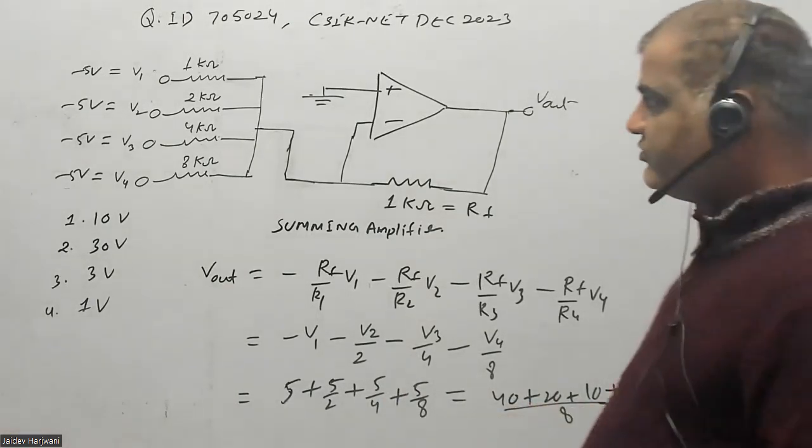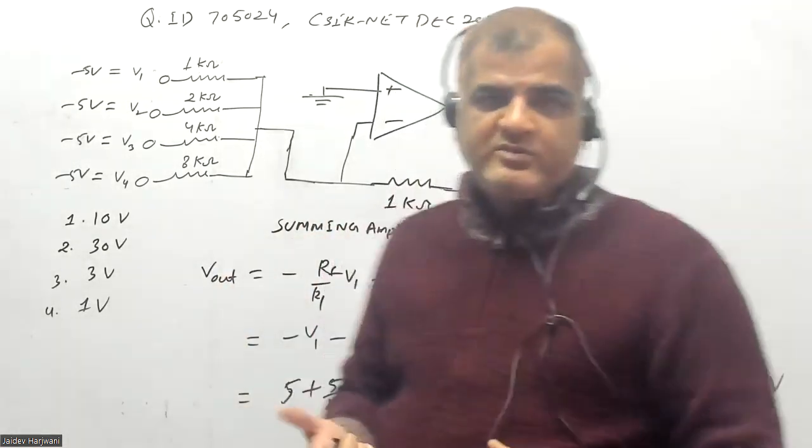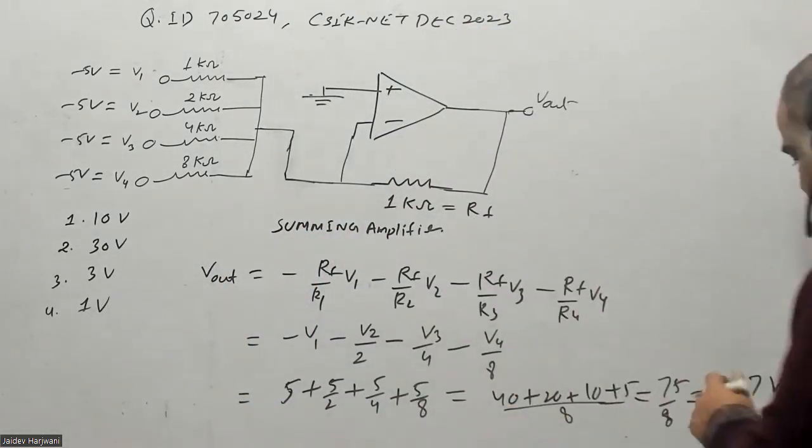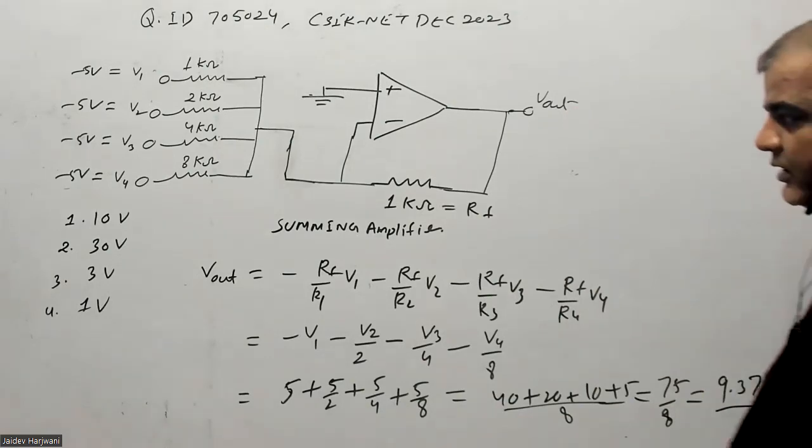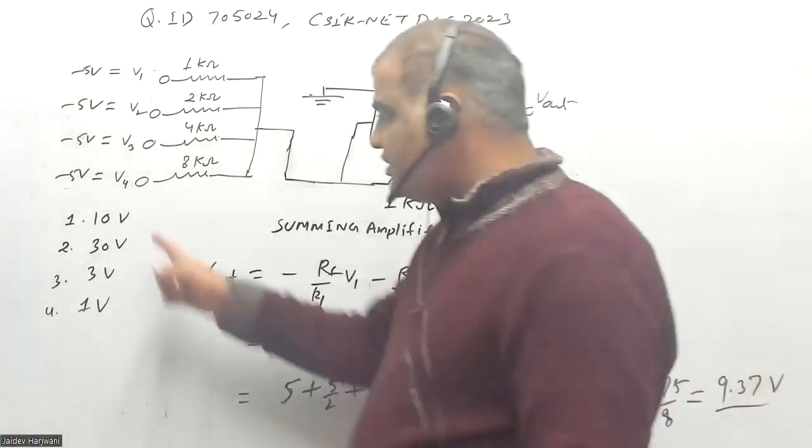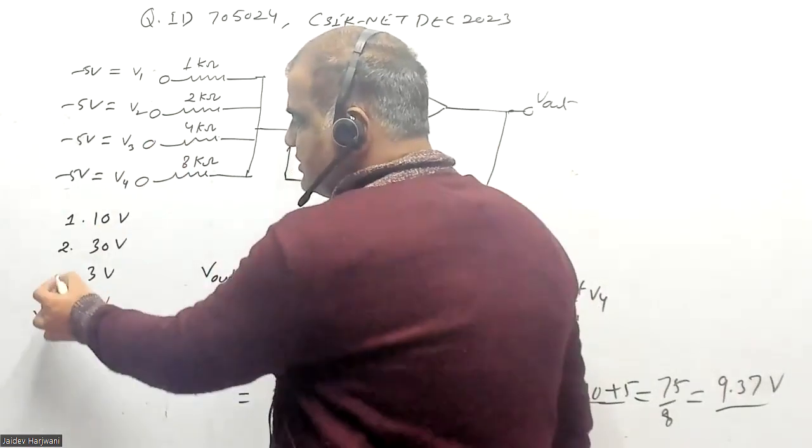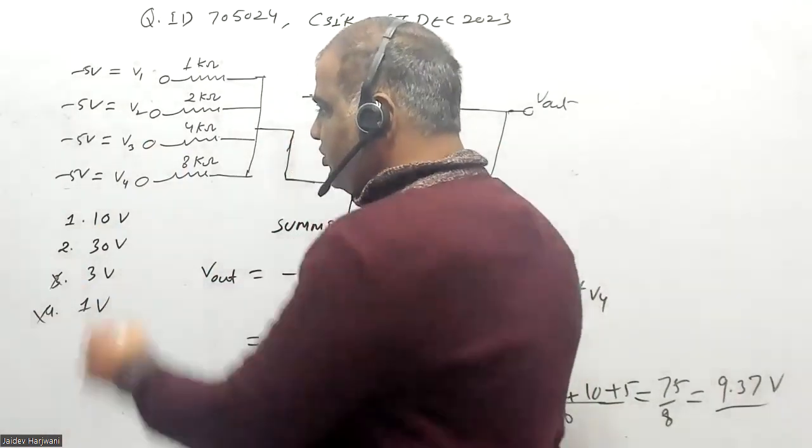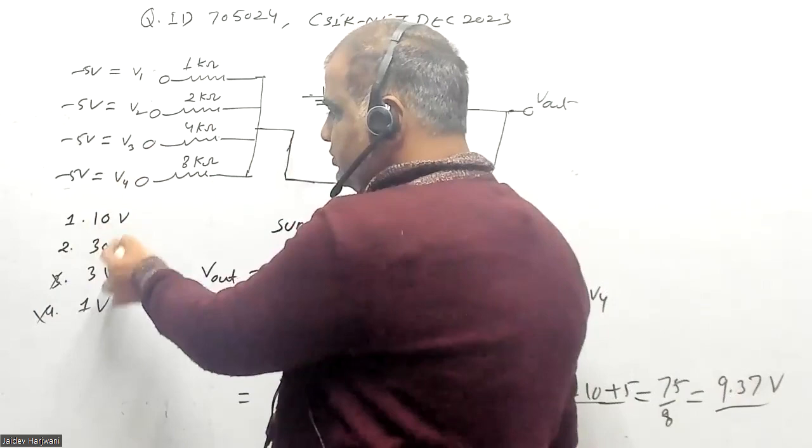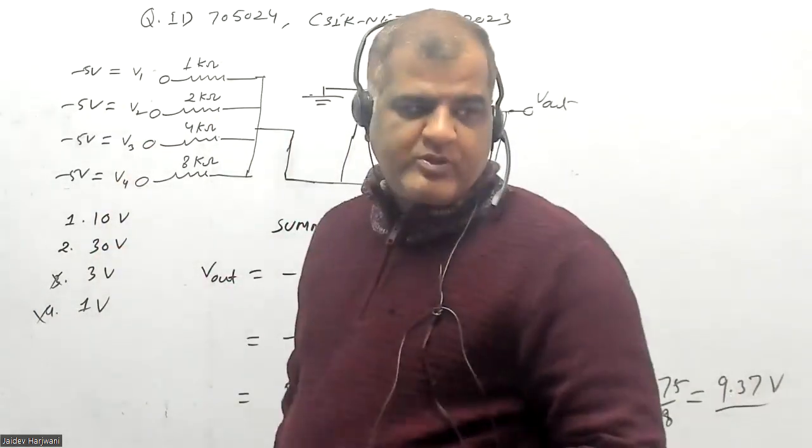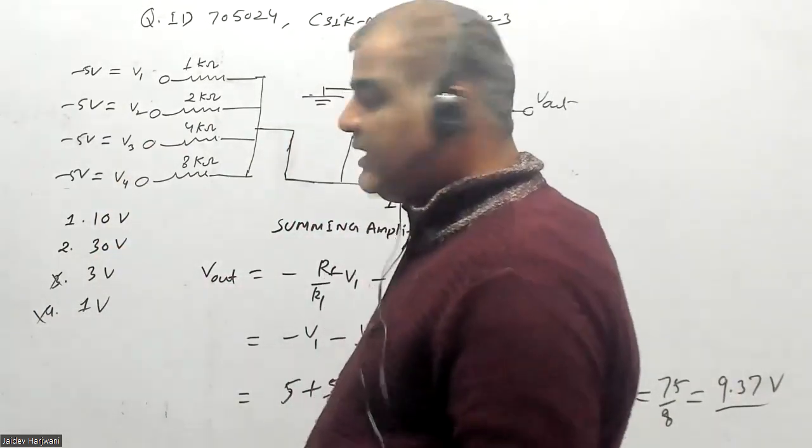So this much voltage if you want to measure all the outputs from this circuit - there will be the range from 0 to 9.37 volts. So the minimum range you require - this cannot be because your output is coming more than this. This cannot be the answer. Out of these two, both can measure all the outputs, but in the question they are asking minimum.